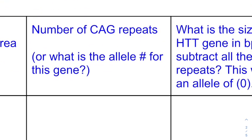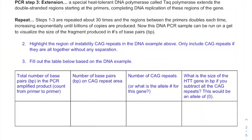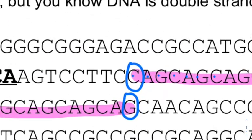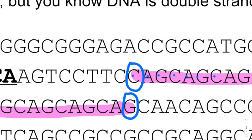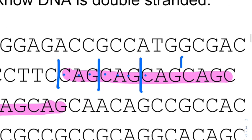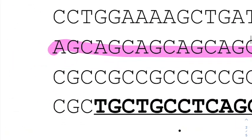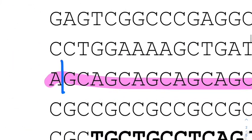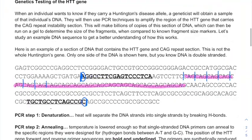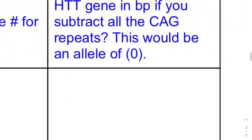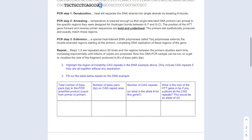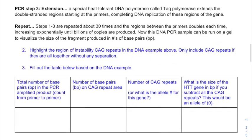The last column asks how many trinucleotide CAG repeats there are — not CAGs individually, but how many tri-nucleotide CAGs there are. Count CAG one, CAG two, and so on. Go ahead and do that on your own, and then I'm going to show the answers.